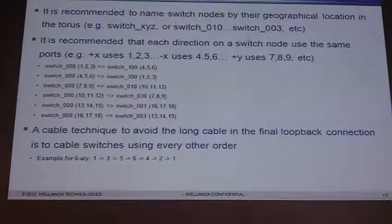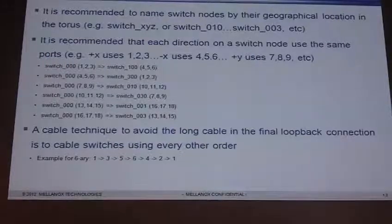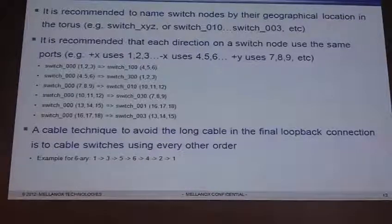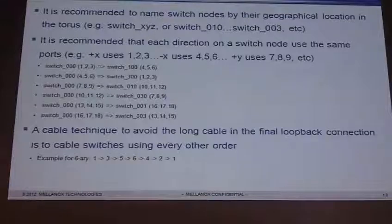Another neat trick: one thing people worry about when building tauruses — especially with a long radix in a certain direction — is that you end up with short cable, short cable, short cable, all the way to the end, where you need a really long cable. The classic way to avoid this long end cable is to cable the switches in every-other order. For example, if you have a 6-ary torus in the X direction, you cable 1 to 3, 3 to 5, 5 to 6, 6 to 4, 4 to 2, and then 2 back to 1. They're close to each other physically, so everyone is at most two nodes away.